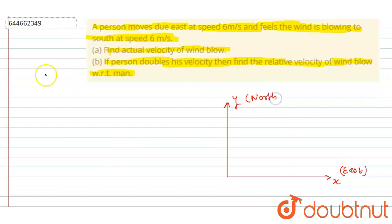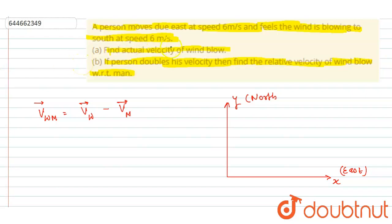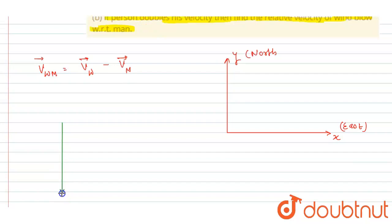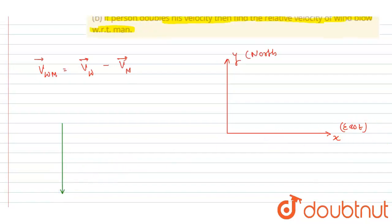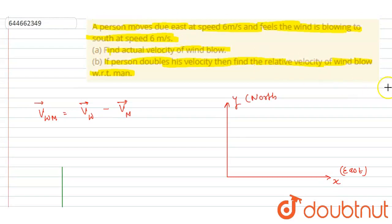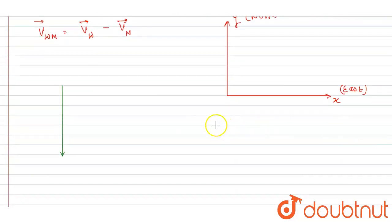The velocity of the wind with respect to the man is equal to the velocity of the wind minus the velocity of the man. So the velocity of wind with respect to man is six meters per second blowing towards south, and the velocity of the man is due east.